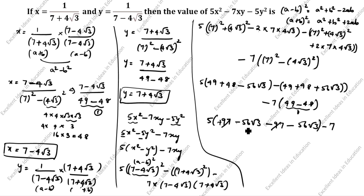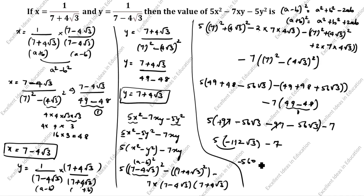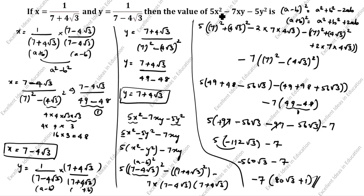The 97 terms cancel. We are left with minus 56 root 3 minus 56 root 3 which is minus 112 root 3. Multiplying by 5 gives minus 560 root 3, minus 7. Taking minus 7 outside as common: minus 7 times (80 root 3 plus 1). So the value of 5x square minus 7xy minus 5y square is minus 7 times (80 root 3 plus 1). This is the answer. Thanks for watching this video.